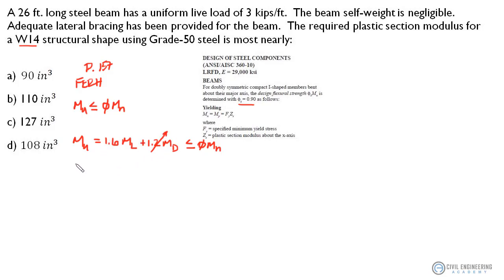So we can quickly solve for M sub U. It's going to equal 1.6 and if you'll remember a moment for a distributed load across a simply supported beam is the distributed load times the length of the beam squared all divided by 8.